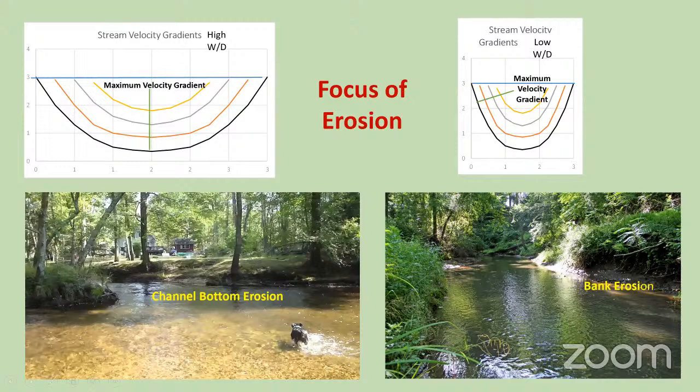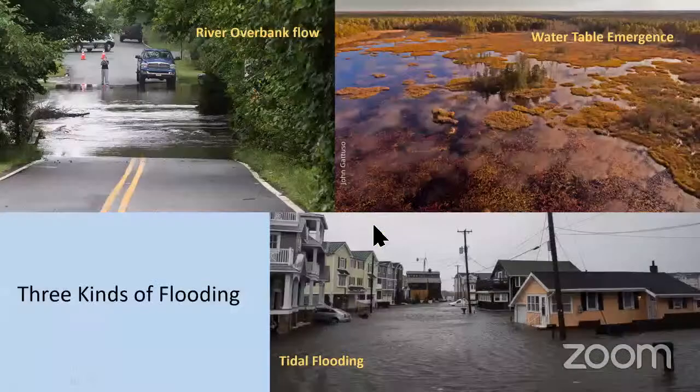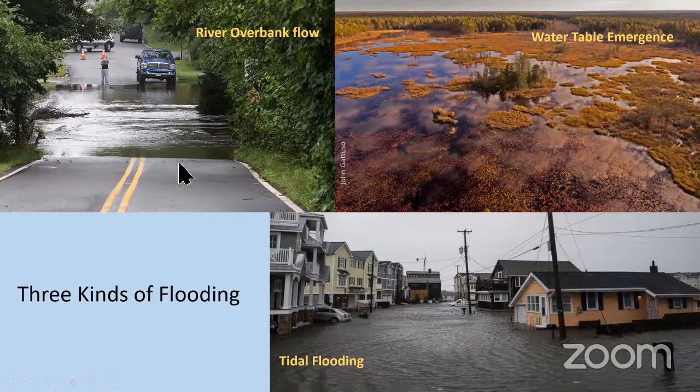South Jersey is subject to three kinds of flooding. The one I'm going to focus on is river flooding. We do get water table emergence in some places, which is a real pain because it takes a long time for that to drop below the surface again. We get tidal flooding, which can be pretty disastrous. But what I'm really going to talk about is the flooding properties of the streams.